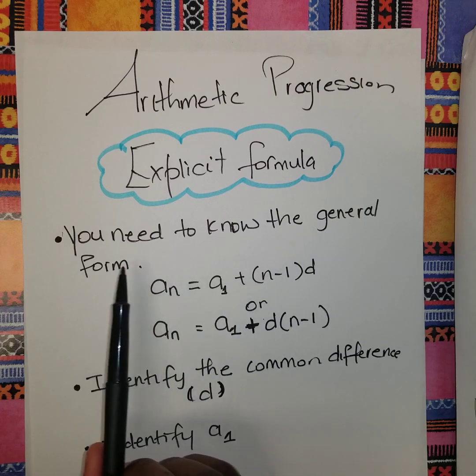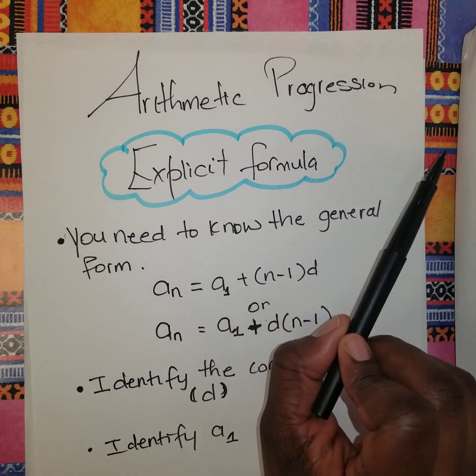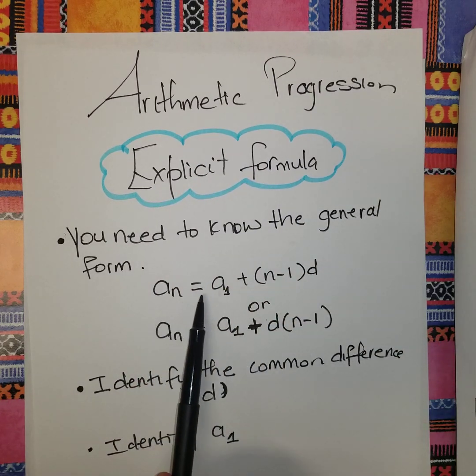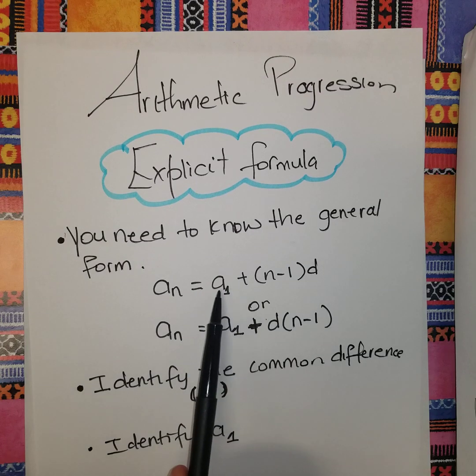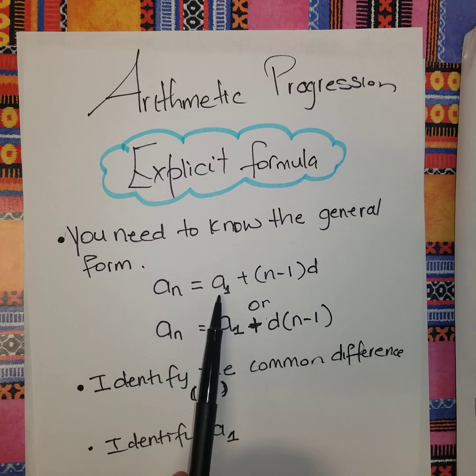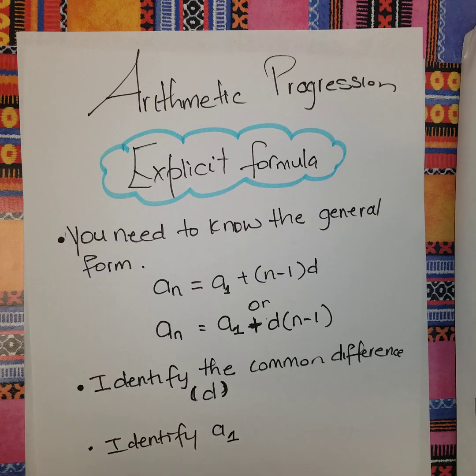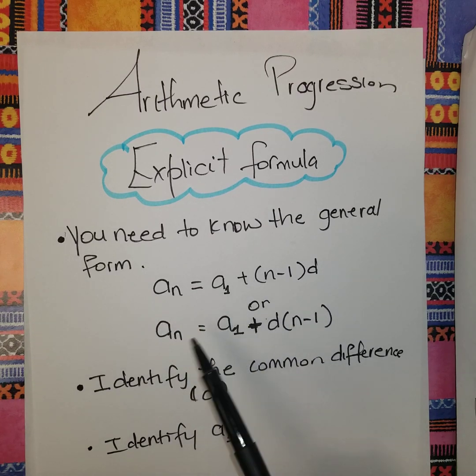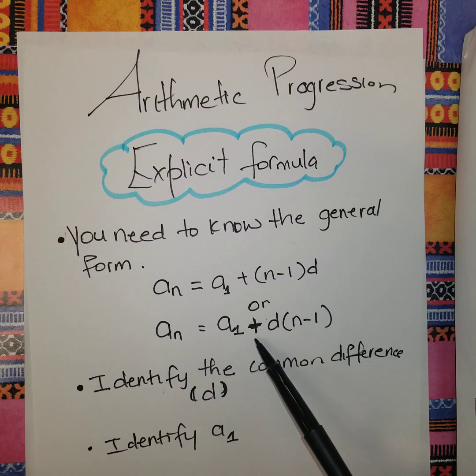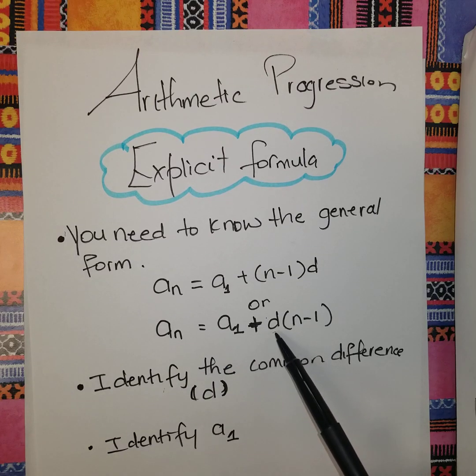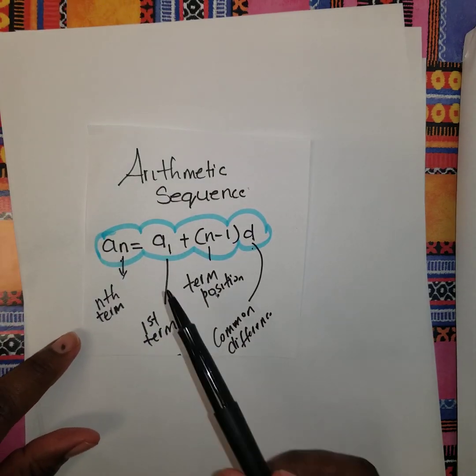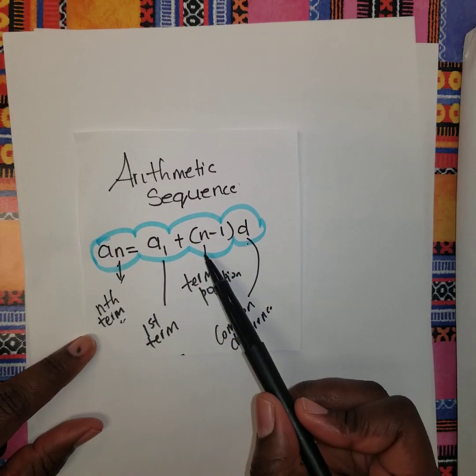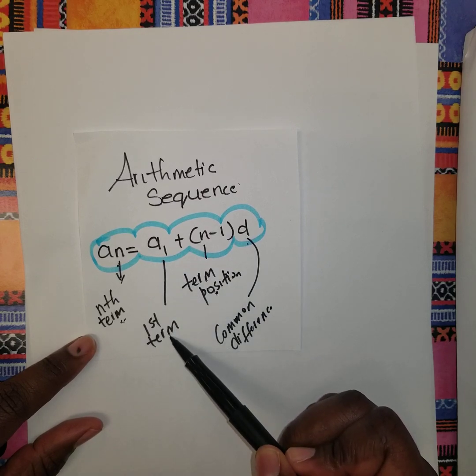know the general form for the arithmetic progression, which is a_n = a_1 + (n-1)d, where a_1 is the first term. Or it can be written as a_n = a_1 + d(n-1). We know that a_n represents the nth term, and a_1 is the first term.